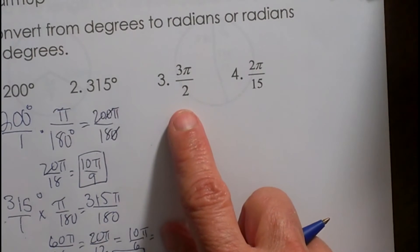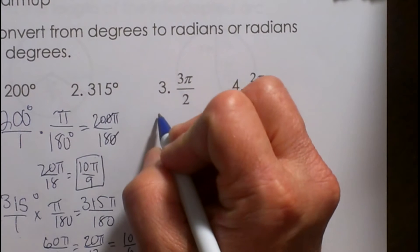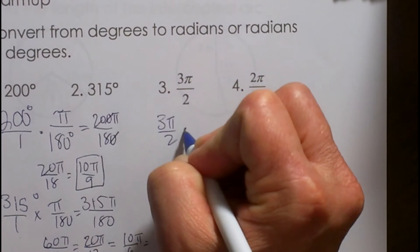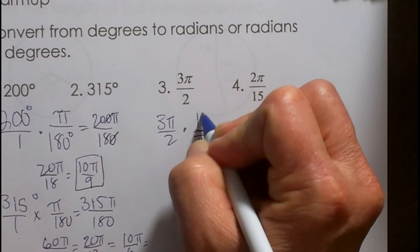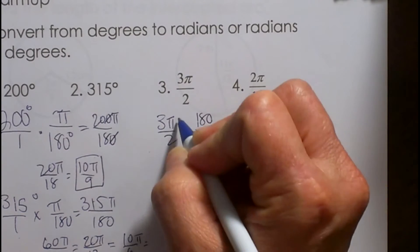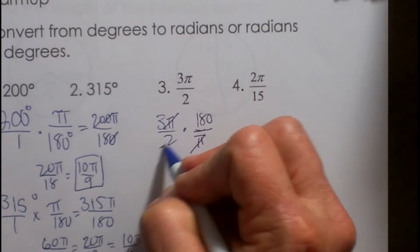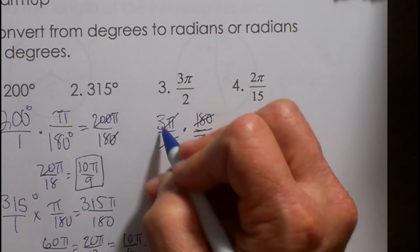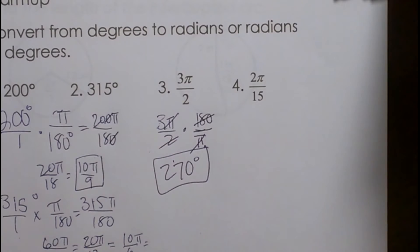Now how do you convert from radians back to degrees? We use our same ratio but this time pi goes on the bottom and 180 is on top. That is nice because the pi cancels. For example, 3 pi over 2: 2 goes into 180, 90 times, and 90 times 3 is 270 degrees. So that one was pretty easy.